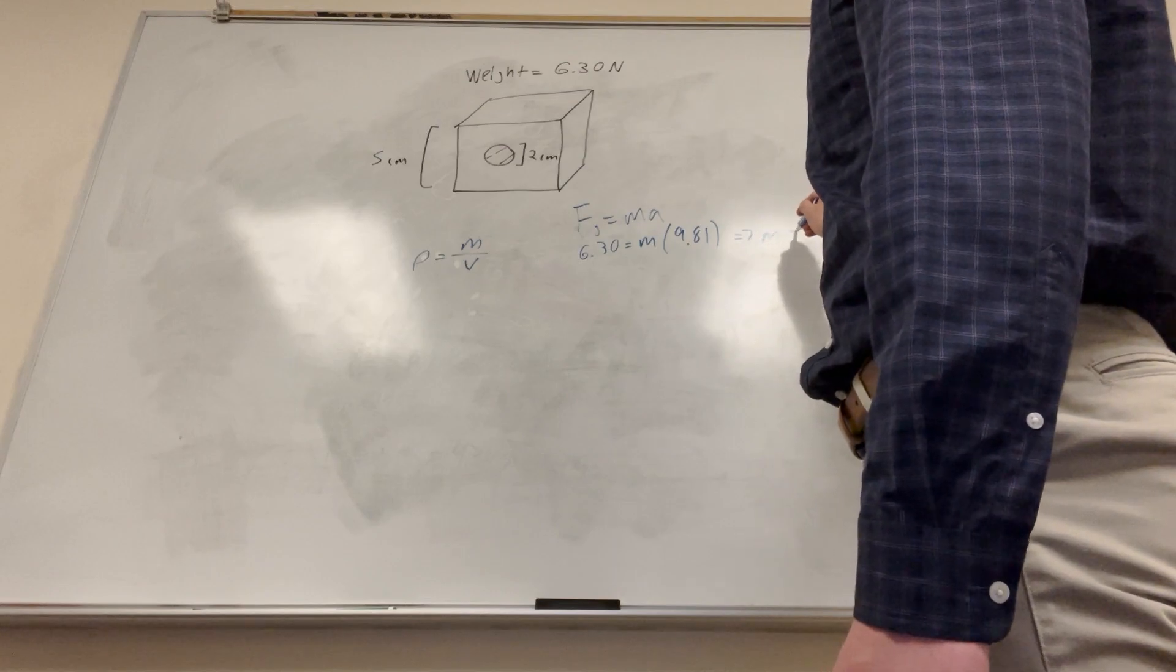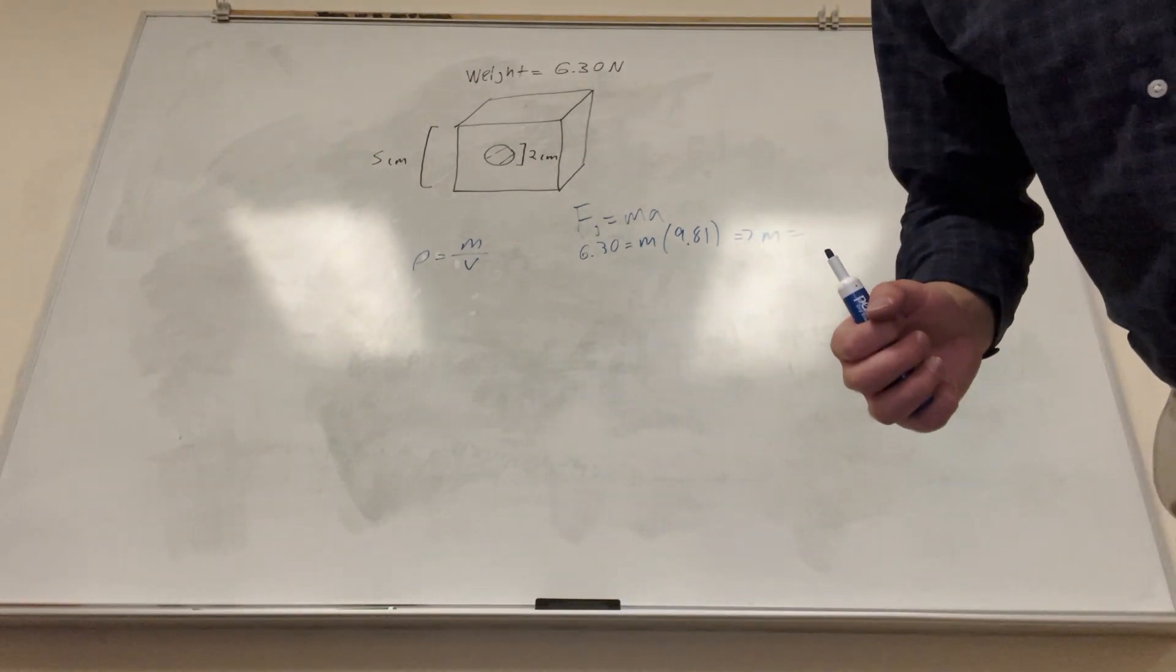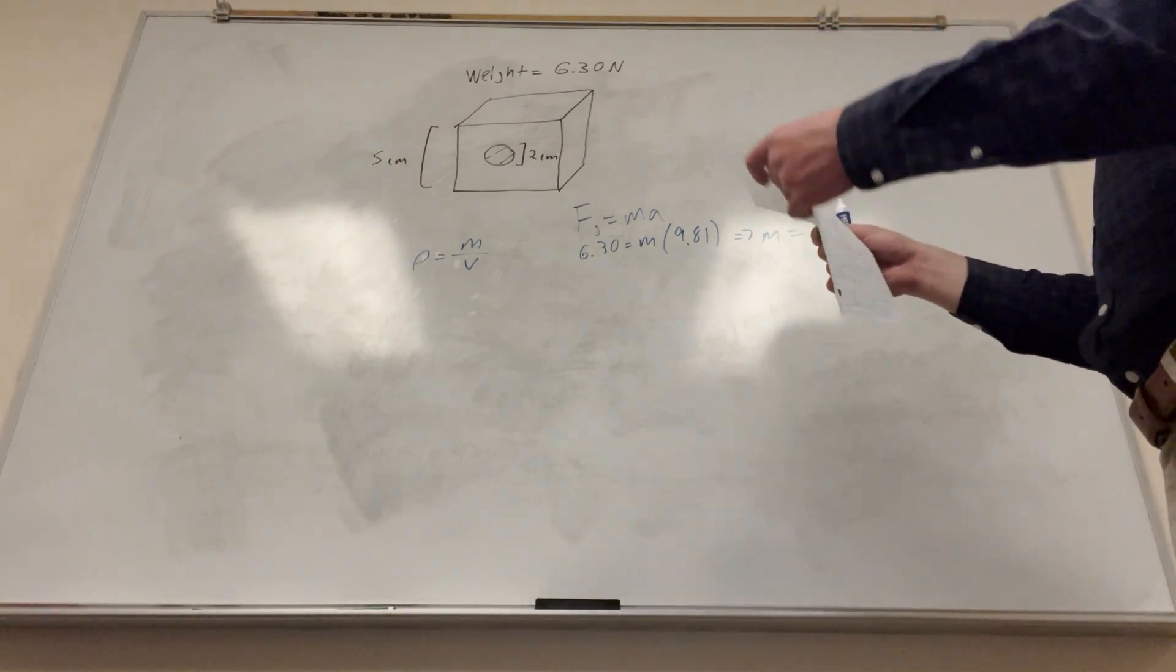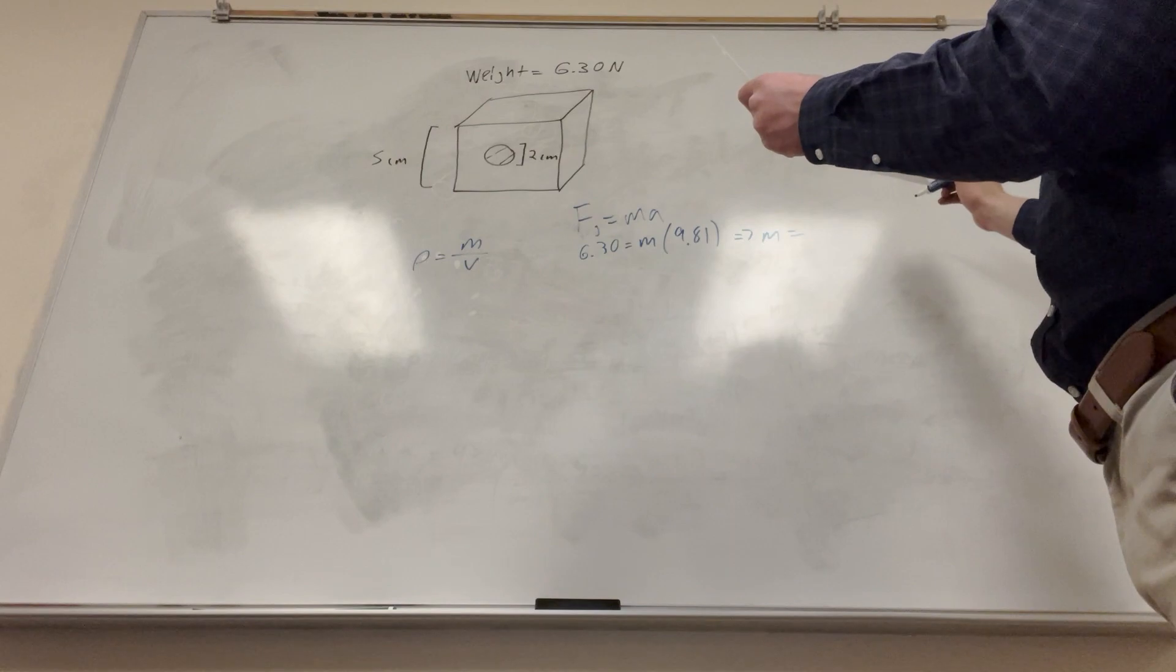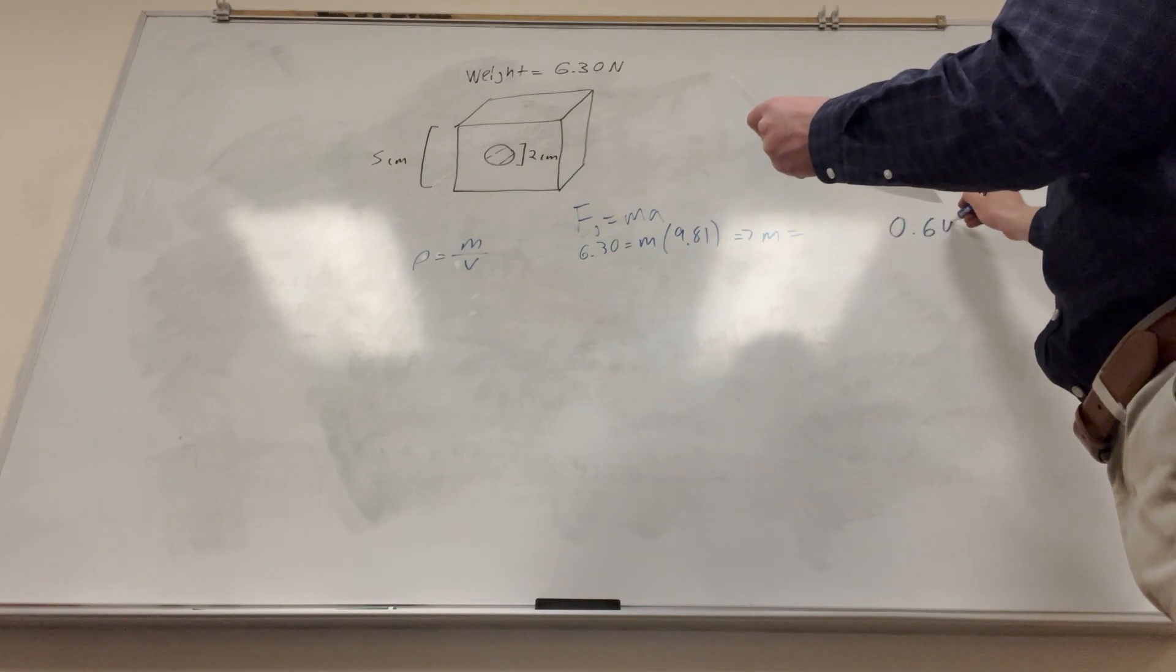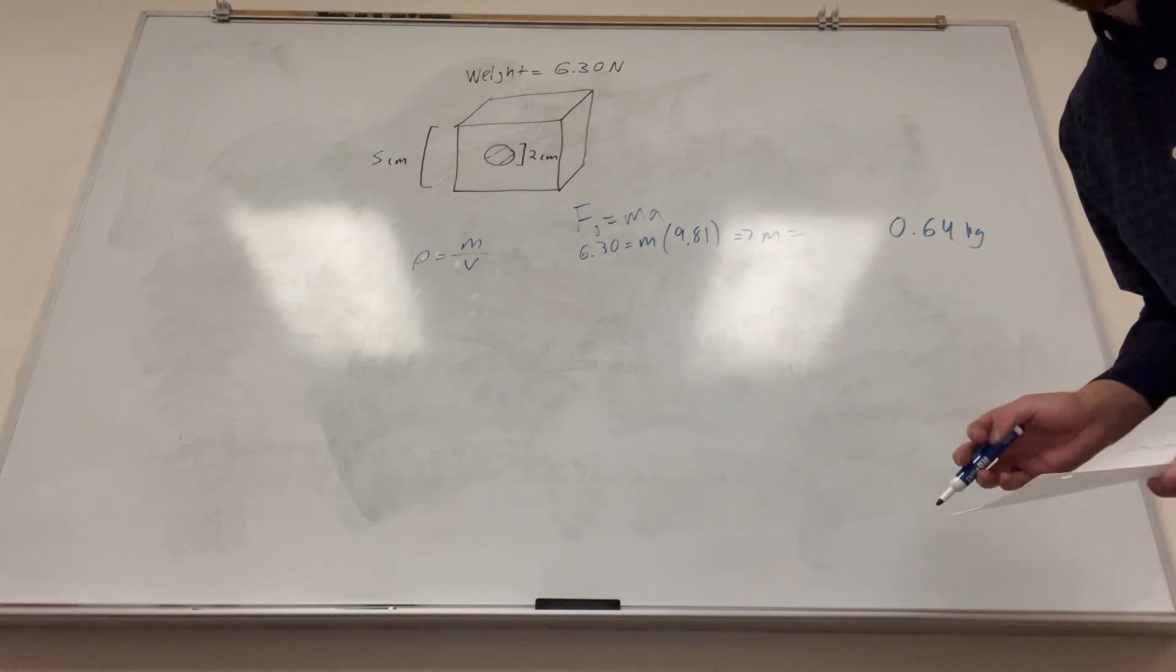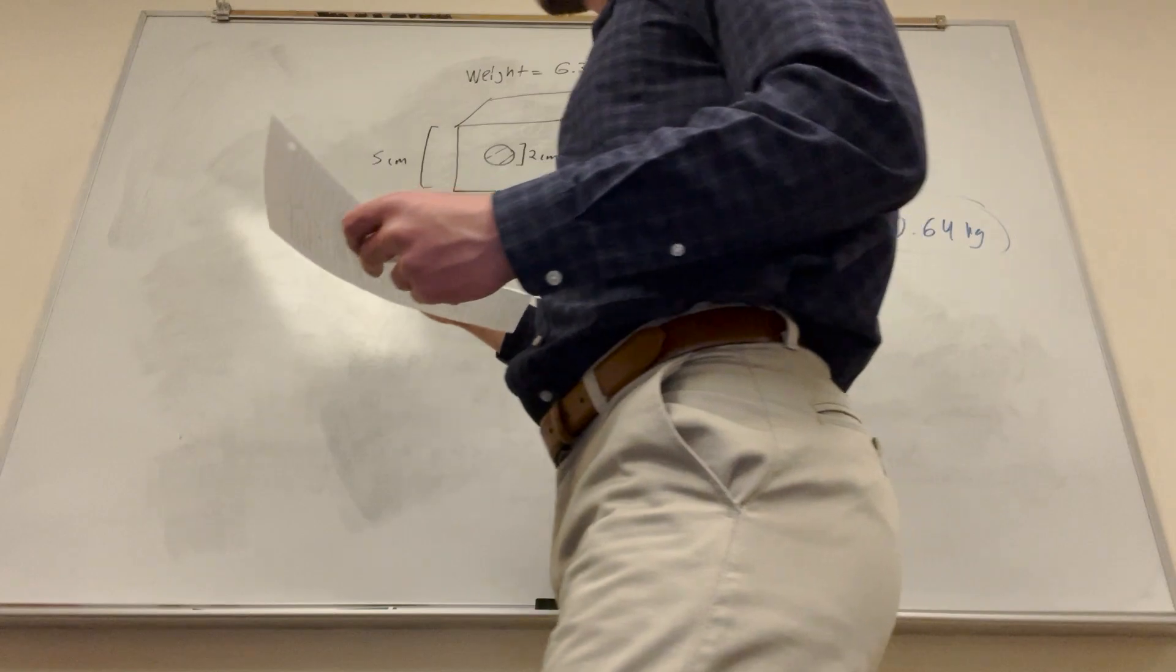Now we're going to get that the mass is equal to... I can't be right. I'm looking at the wrong problem. 0.64 kilograms. Okay. So that's the number that we need. So that's mass. Found one thing. Now let's find volume.